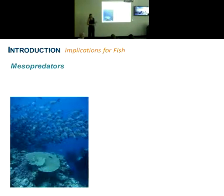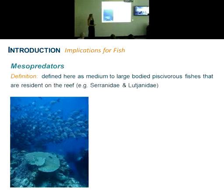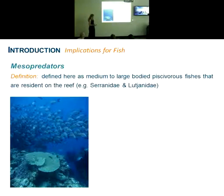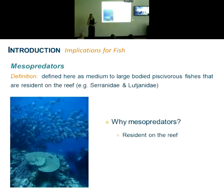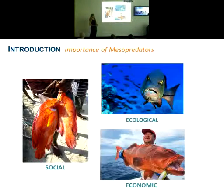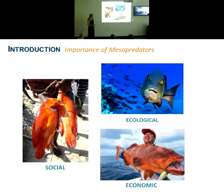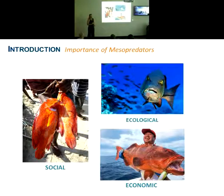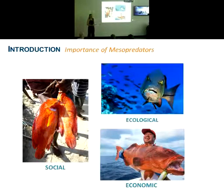To do this, I'll be focusing on mesopredators, which I define as medium-to-large bodied piscivorous fishes that are resident on the reef — something like members of the family Serranidae or Lutjanidae. Being resident on the reef is quite important, unlike larger predators that travel between reefs and have a far more pelagic lifestyle. Being reef-resident, they're directly linked to the fish community and energy channels within the reef system. They're also widely considered to play a strong role in the ecology of reef systems as top-down drivers. They have great economic value in subsistence and commercial fisheries and the lucrative dive tourism industry, and in many parts of the world, great social value in various communities and societies.